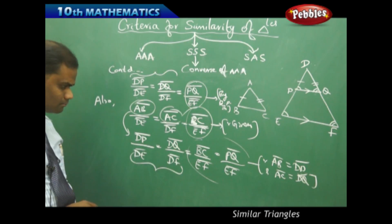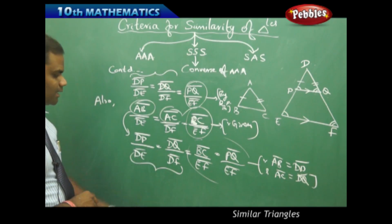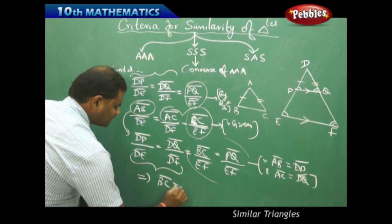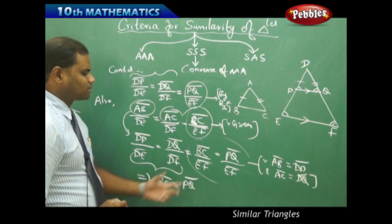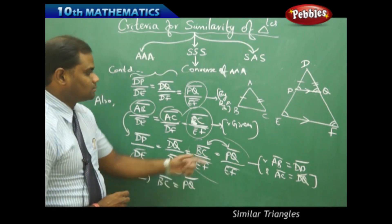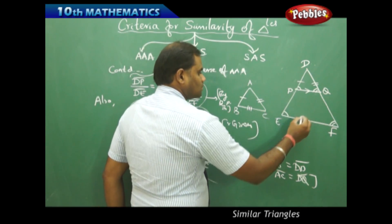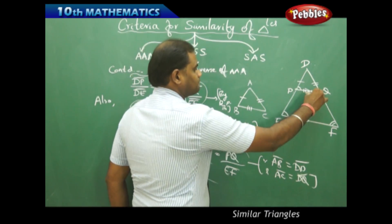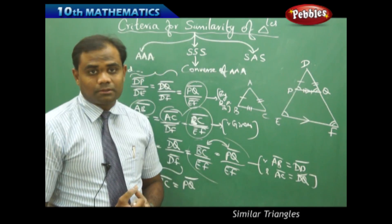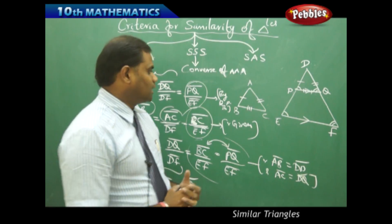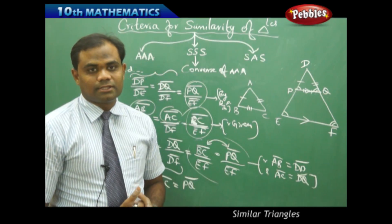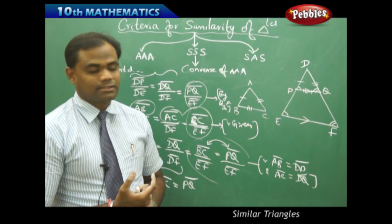Therefore, all the corresponding sides of triangles ABC and DPQ are equal: AB equals DP, AC equals DQ, and BC equals PQ. By SSS congruency, triangle ABC is congruent to triangle DPQ. This congruency will then help us find the corresponding angles equal, completing the proof of the SSS similarity criterion.